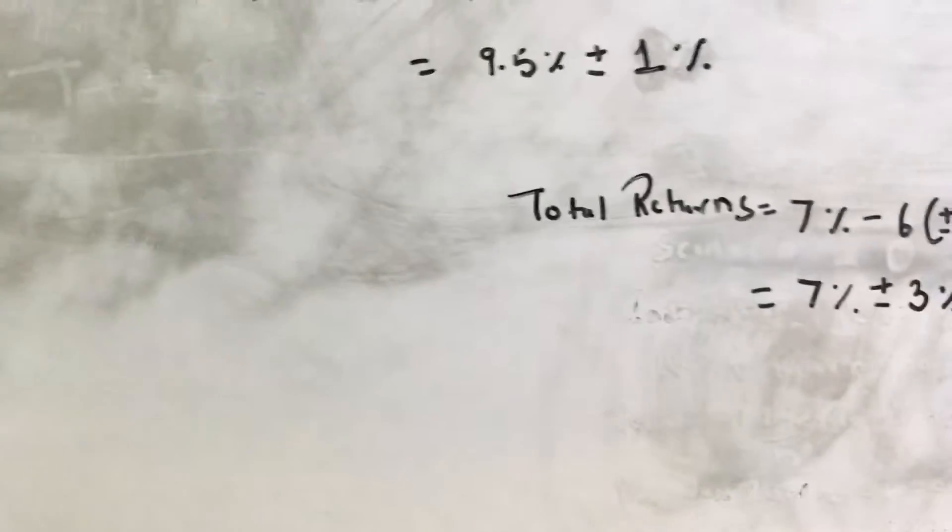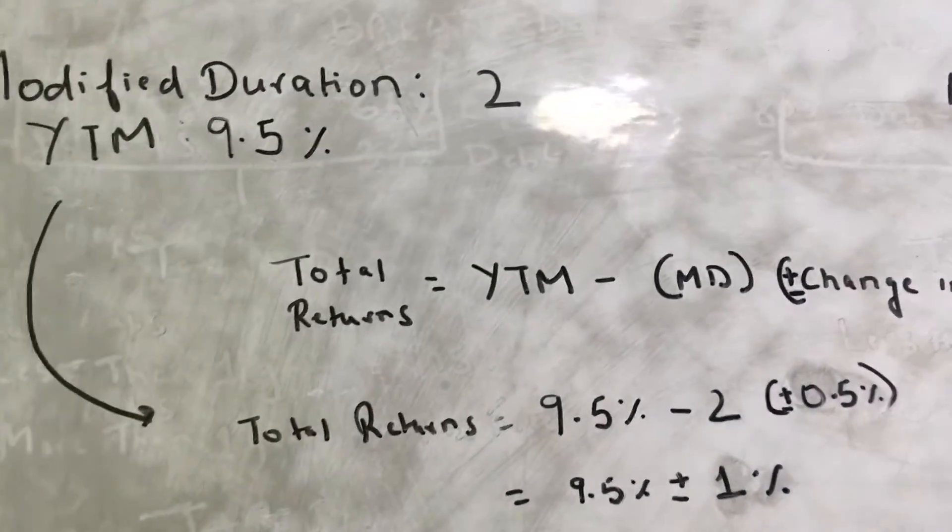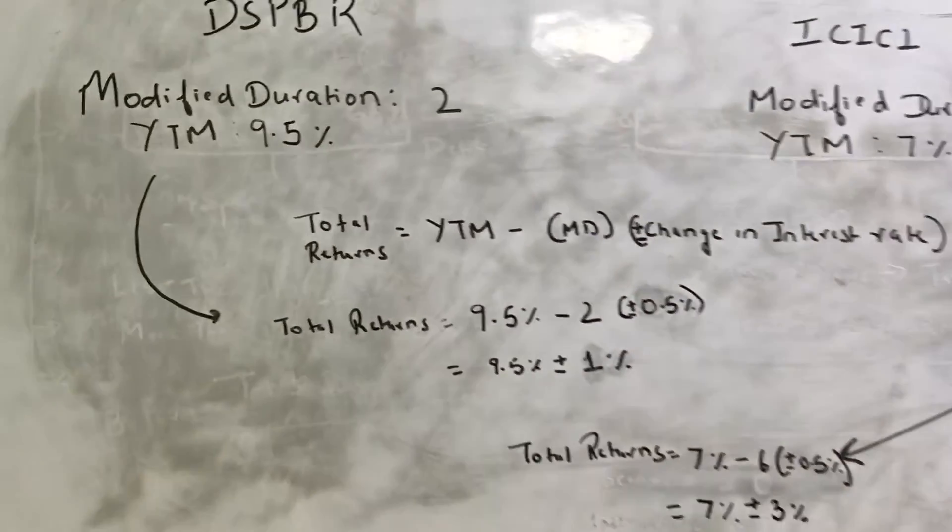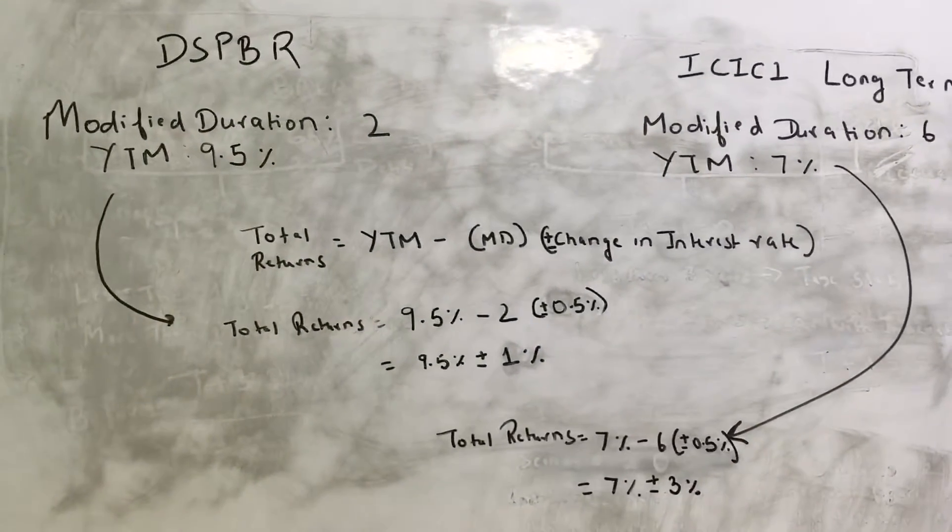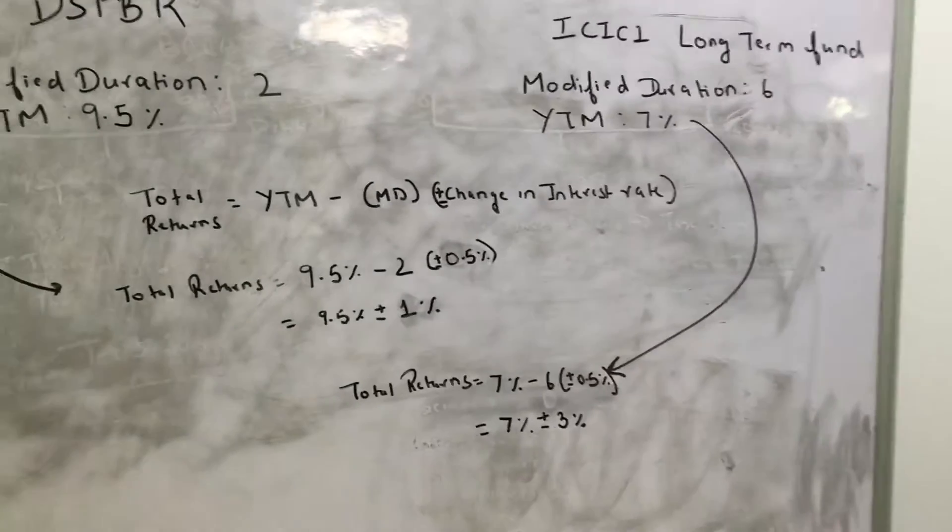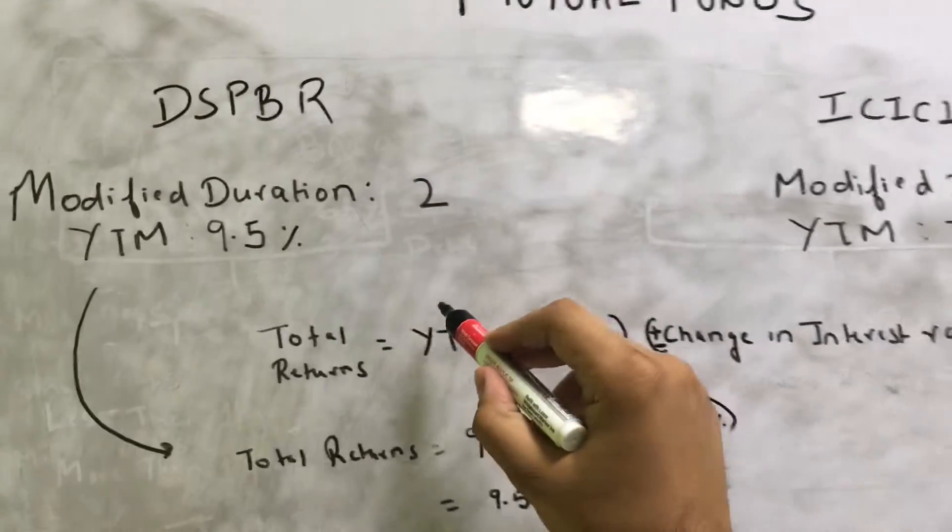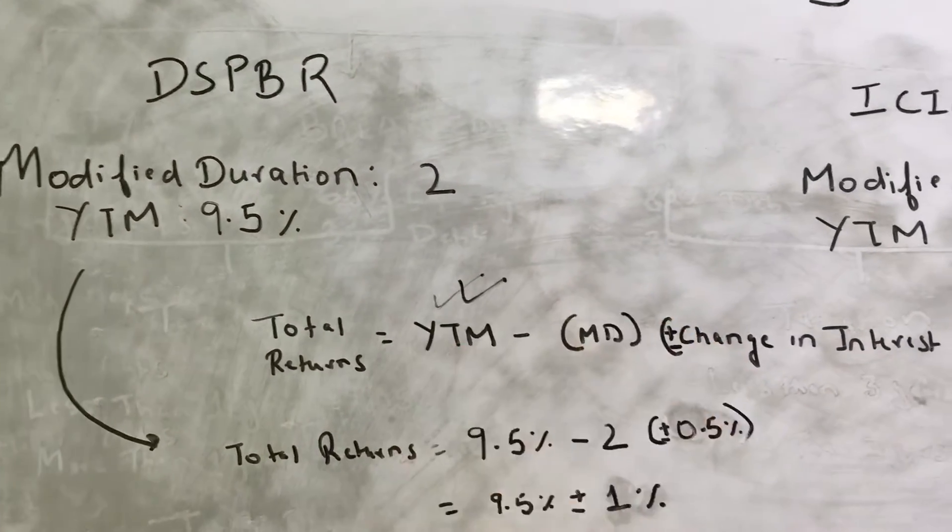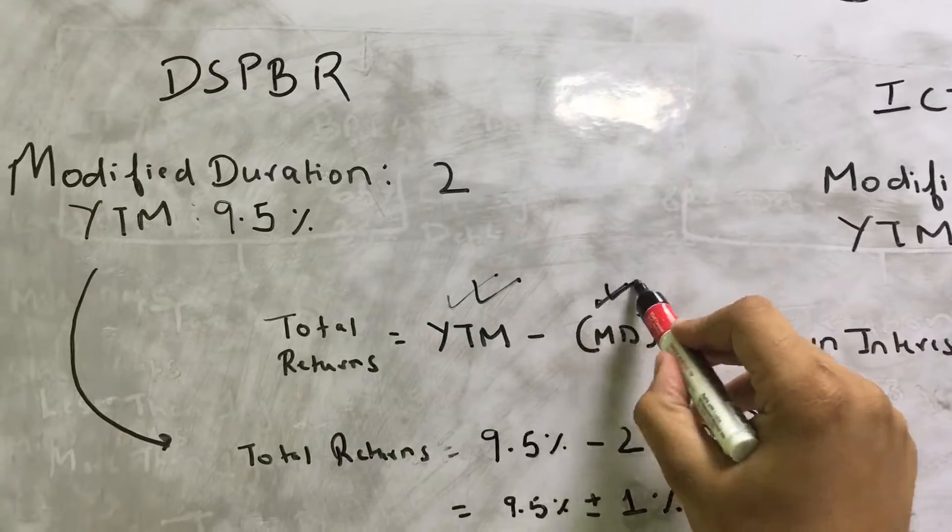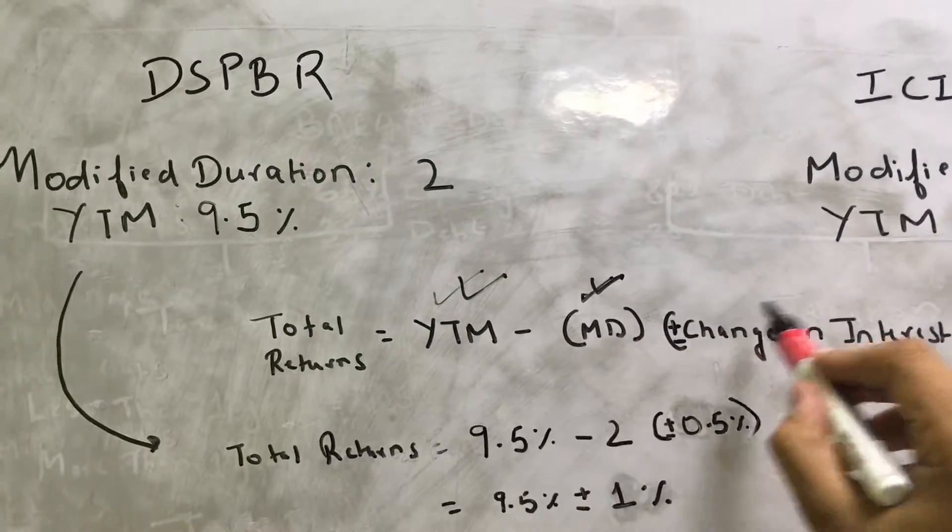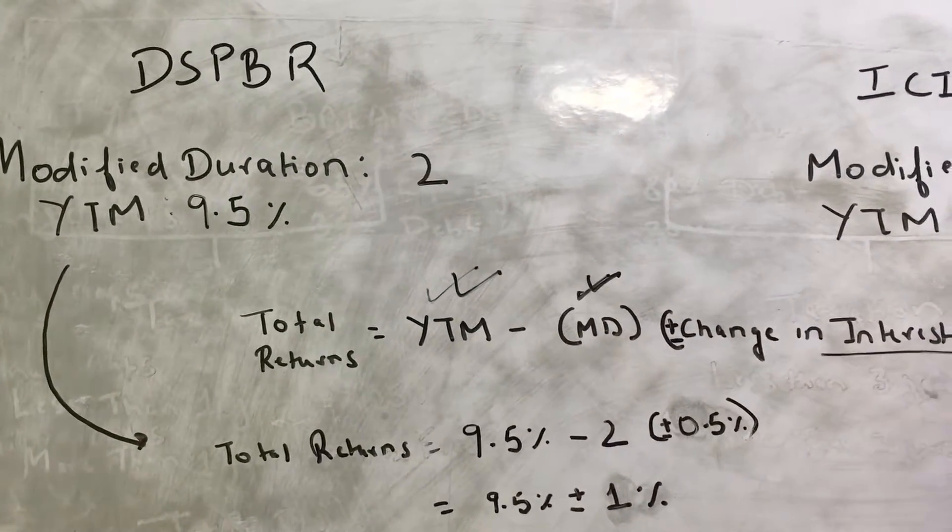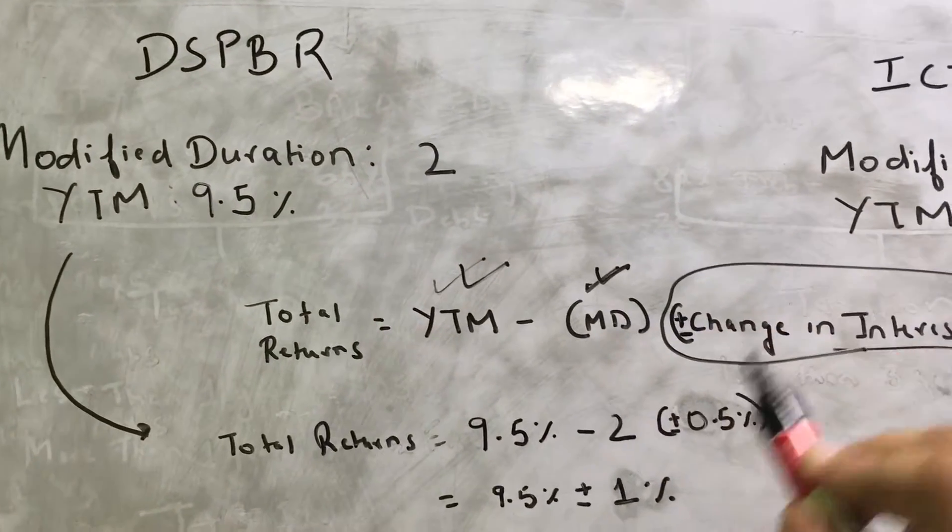So hence we see these factors when we are finalizing our list of recommended debt funds. We see that the more the YTM the better it is, less the modified duration the better it is, because it eliminates the interest rate risk associated to a debt fund.